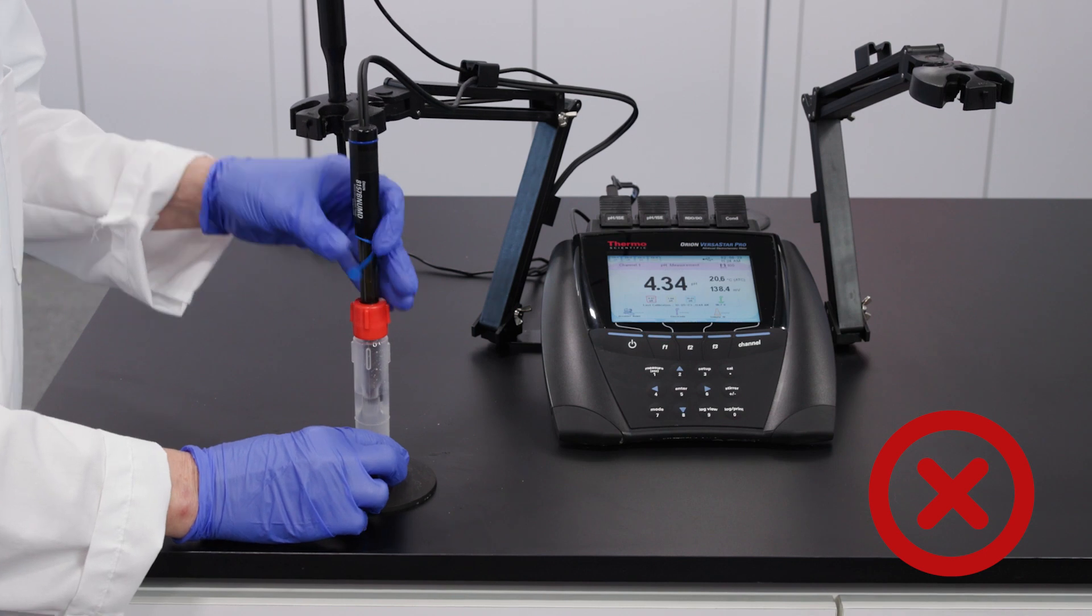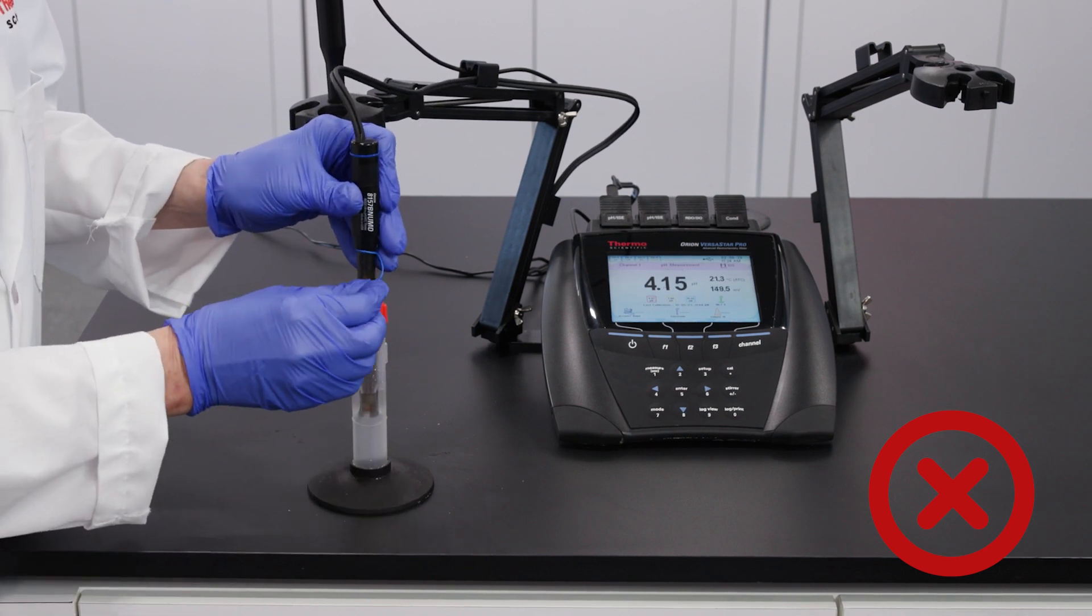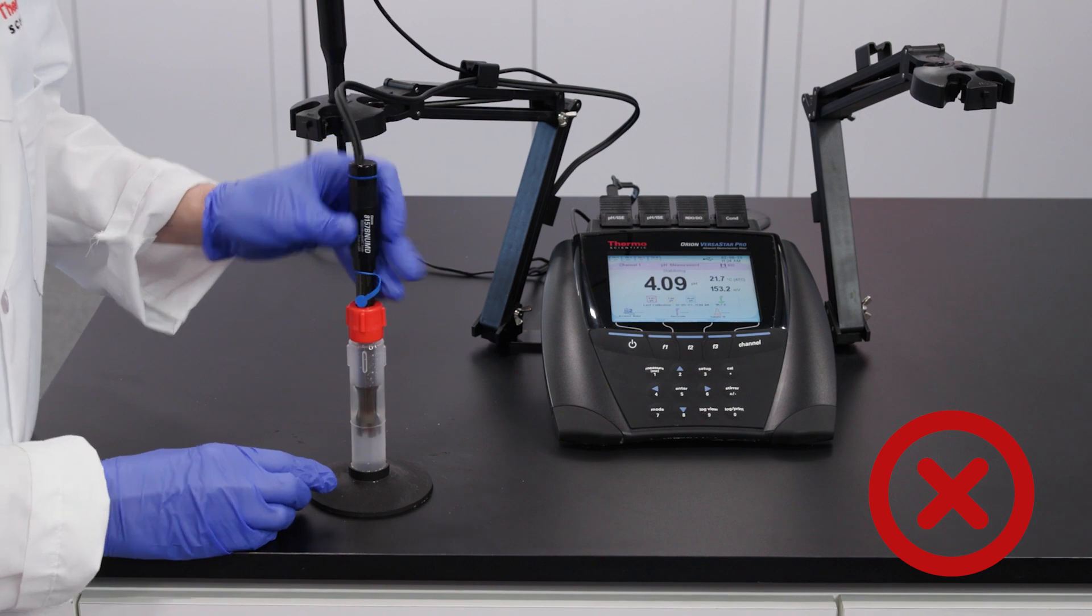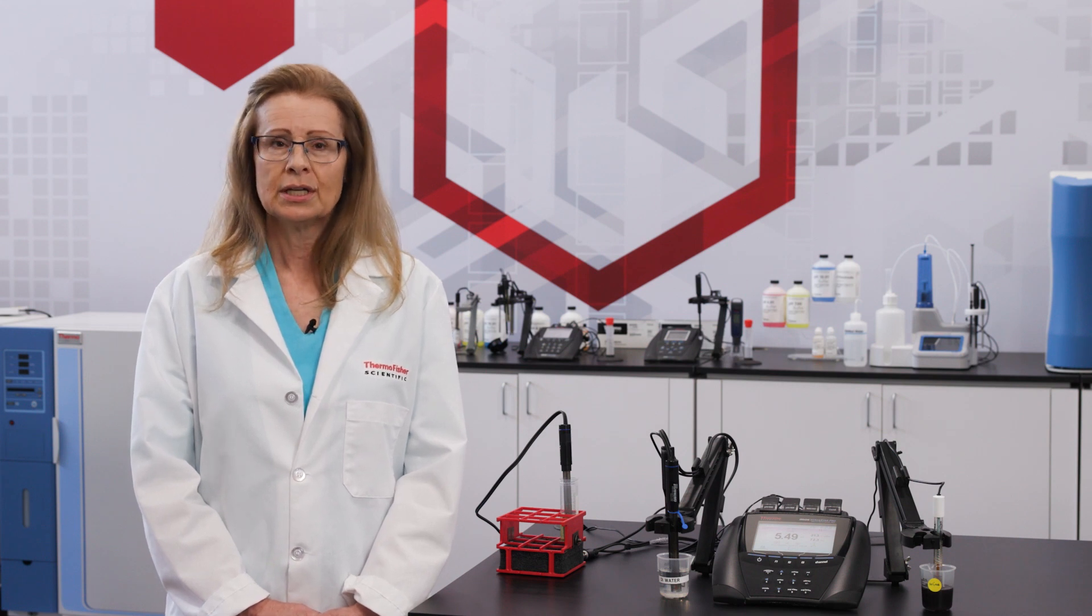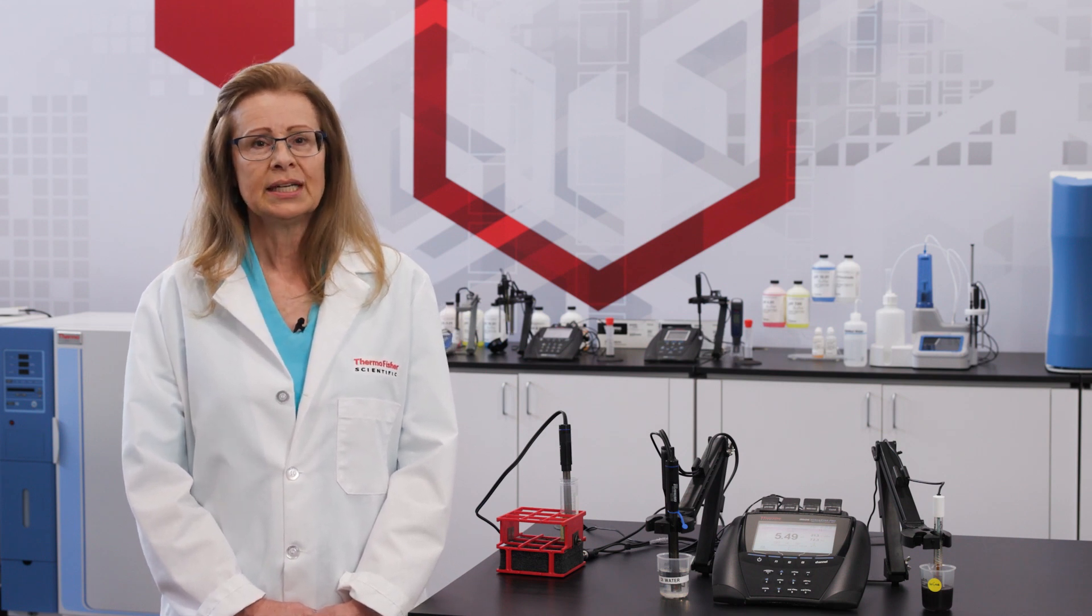Pulling our electrode out of the storage bottle can create a vacuum effect, while pushing the electrode into the bottle can create pressure. A vacuum can pull the fill solution out of the electrode. This shortens the life of a gel-filled electrode and wastes the fill solution of a refillable electrode. Pressure pushes air through the junction and into the electrolyte fill solution around the junction. This interrupts the electrical contact between the sample and the reference, causing unstable readings and even electrode failure in some cases.